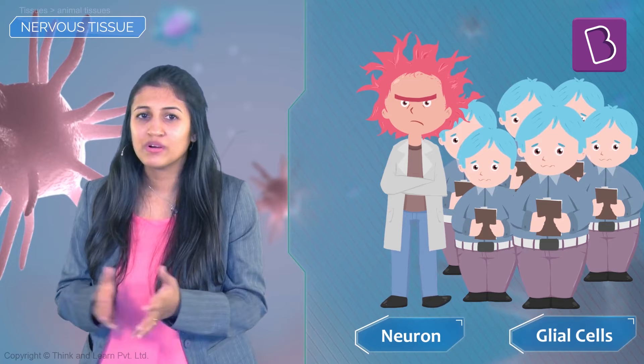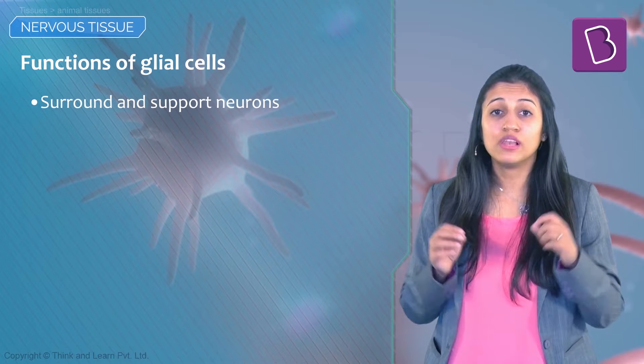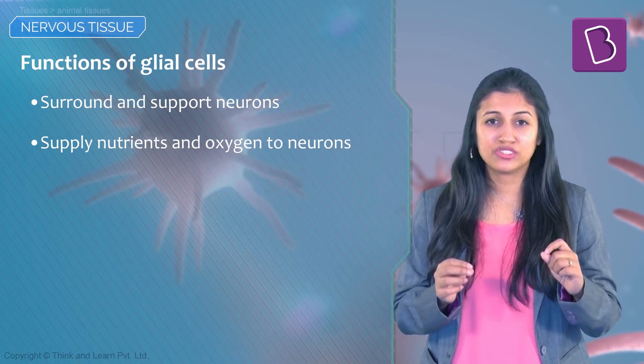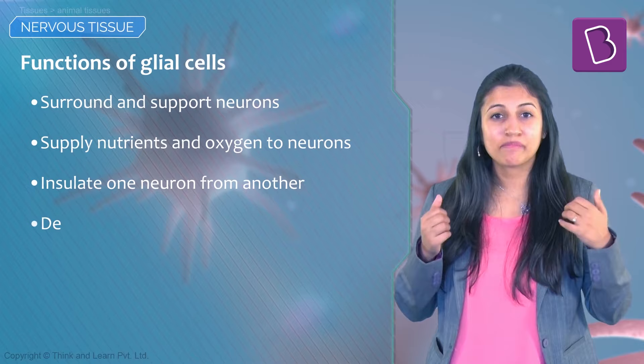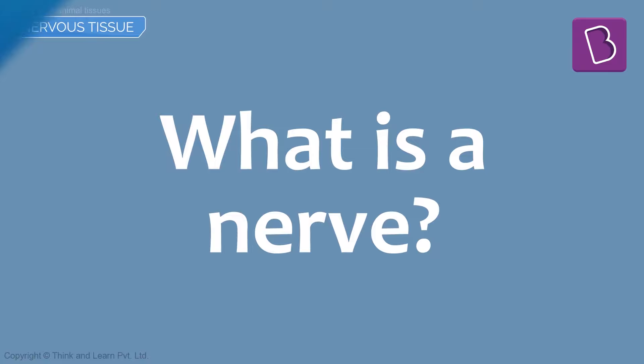In Greek, 'glia' actually means glue — the glue of the nervous system. Although this is only partially accurate, glial cells do surround and support the neurons. Along with that, they supply nutrients and oxygen to neurons, insulate one neuron from the other, destroy pathogens, and help protect these neurons.